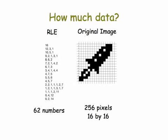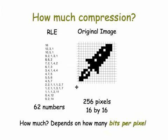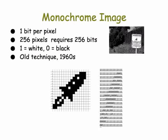So we're doing compression — let's ask how much data is required. On the left we have our compressed data and on the right we have our original image. The original image is 256 pixels because it's a 16 by 16 array, and on the left we have 62 numbers. How much compression is going on here? It depends, among other things, on how many bits we're using for each pixel. One way to do this image — it's black and white after all — is to use one bit per pixel. This would be called a monochrome image, an old technique used in the 1960s when computer screens could really only handle two colors.